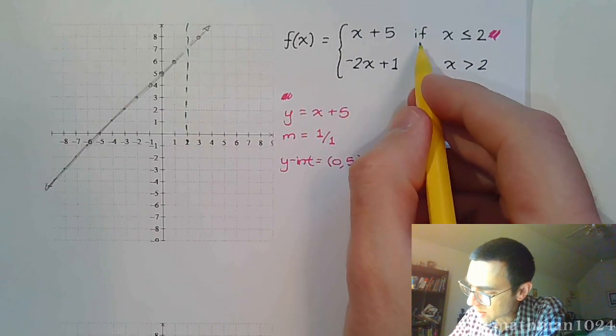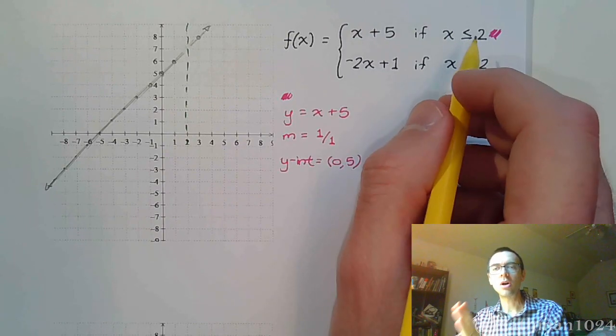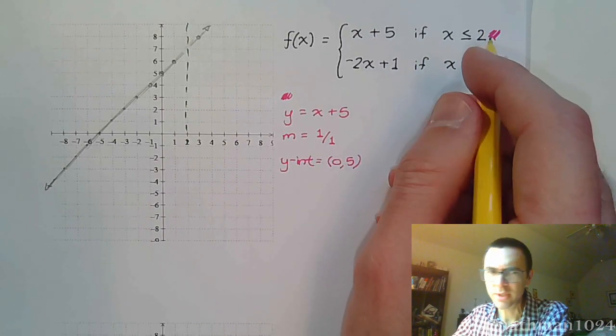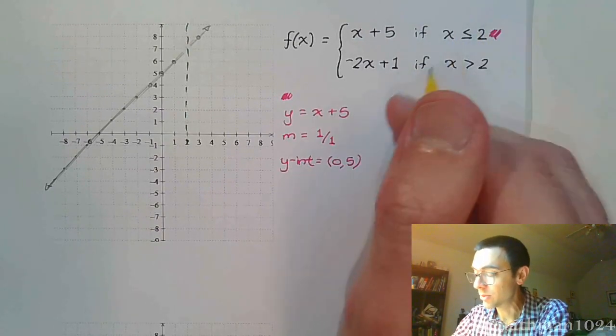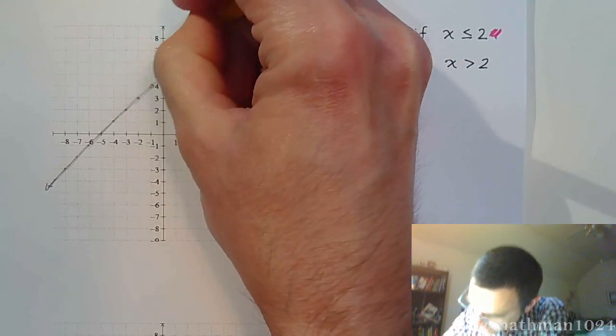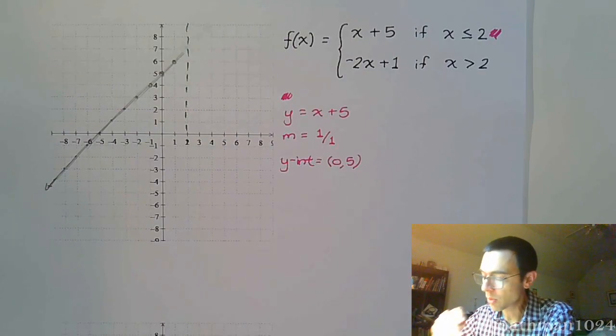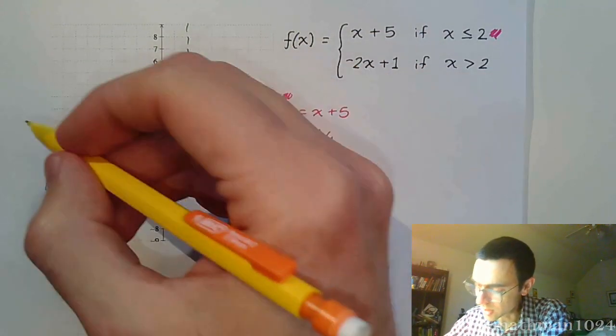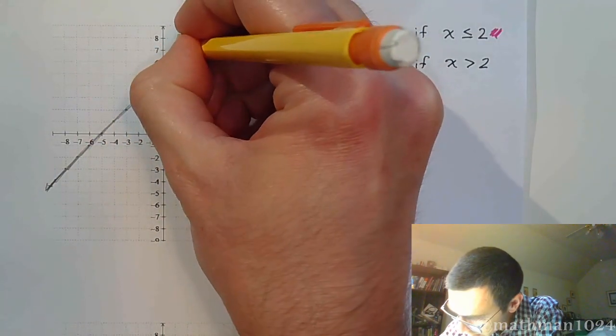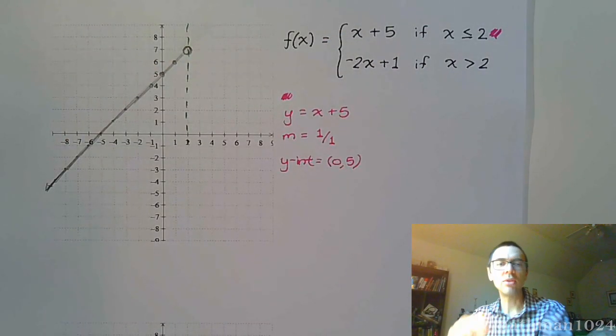This says when x is less than or equal to 2, that means you keep the pieces that are on the left side of 2. Which means I'm going to erase whatever's here on the right side. That stuff is now gone. It's like it never existed. Your function is this line all the way up to where x is equal to 2, and then it's going to stop.